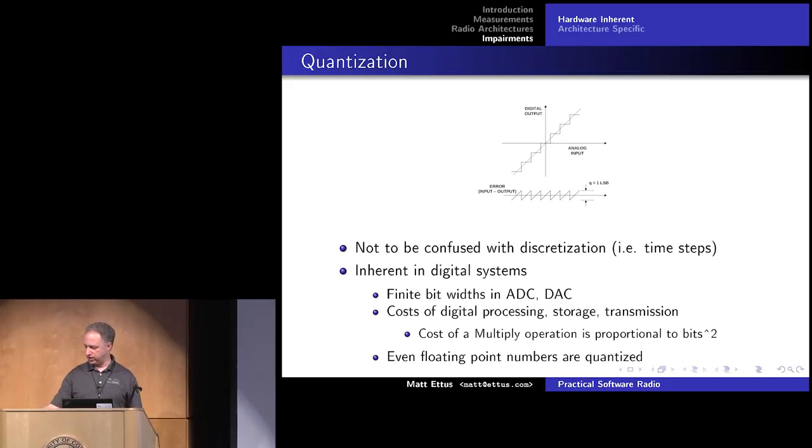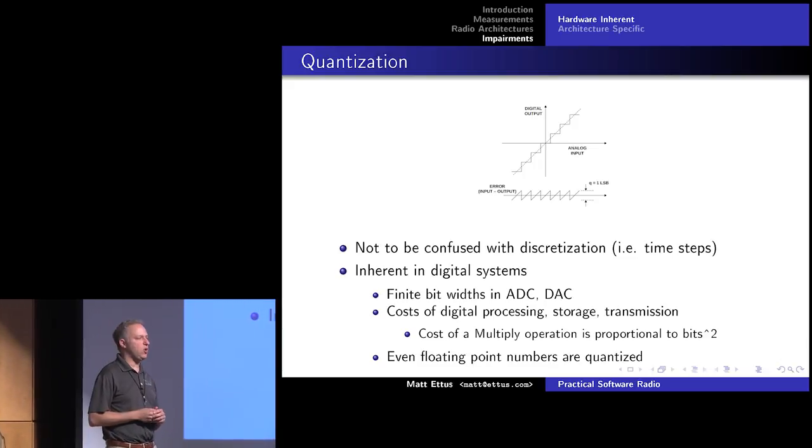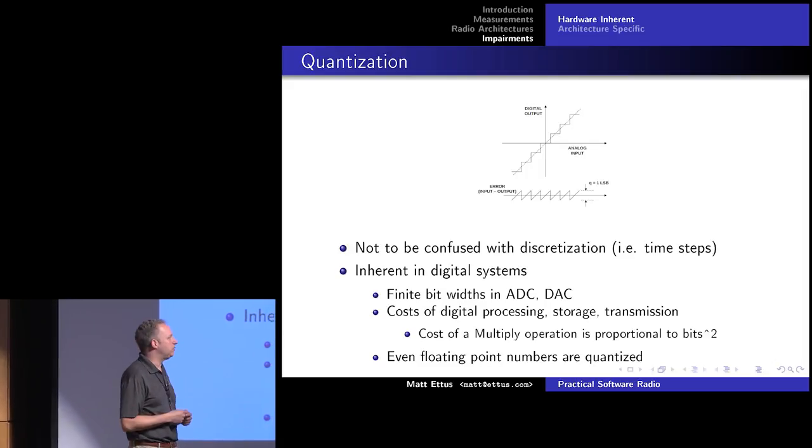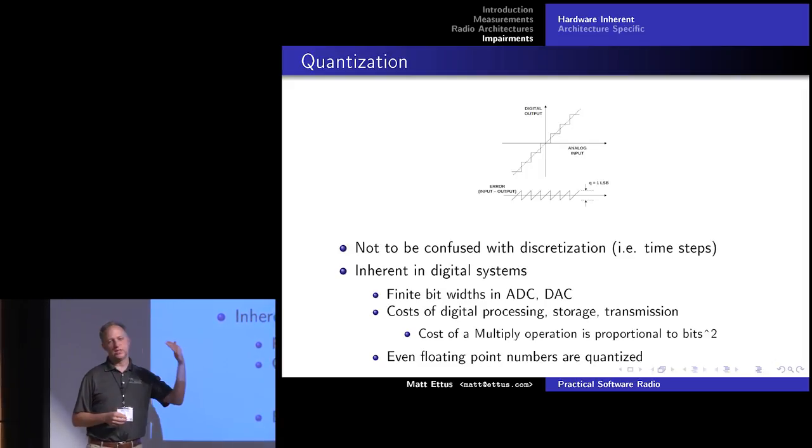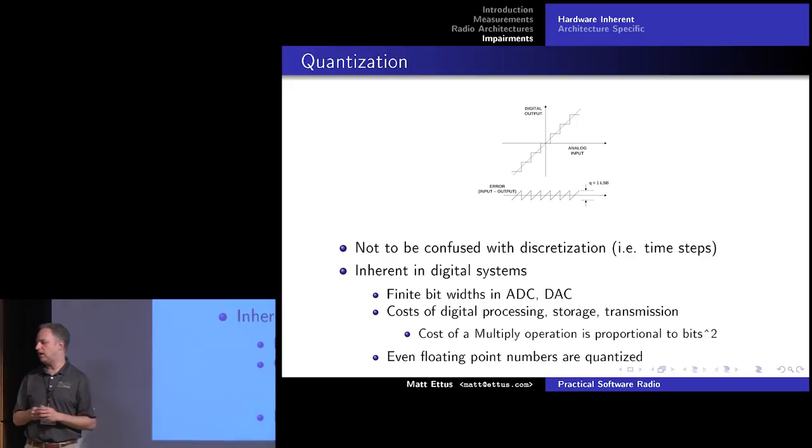One other misconception that we run into a lot is around quantization. One thing we hear a lot with our radios is someone will ask, okay, how much gain does this have? How much AGC does it have? And then how many bits are in the A to D converter? And they'll do some math and come up with, oh, the one LSB of the A to D converter is this amplitude of signal. And so I can't see any signal weaker than that.